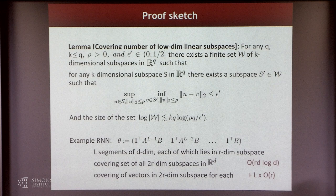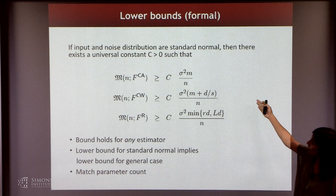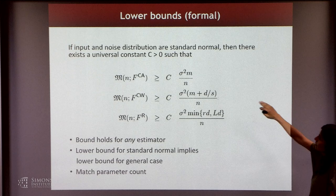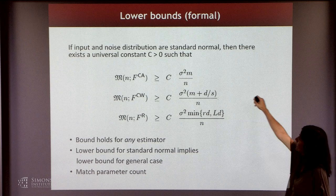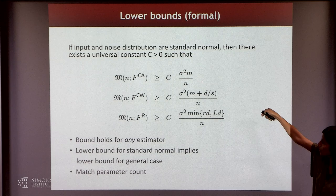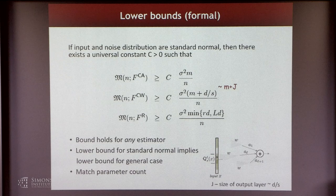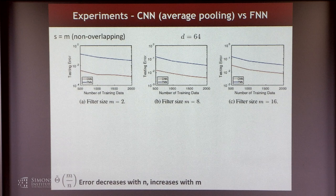For lower bounds: if the input and noise distributions are standard normal, there exists a universal constant such that we get the rates discussed — essentially the parameter counting arguments in each case. The output size is D/S, giving back those standard rates. The proof for the lower bound is based on Fano's lemma and is straightforward if you know those standard statements.